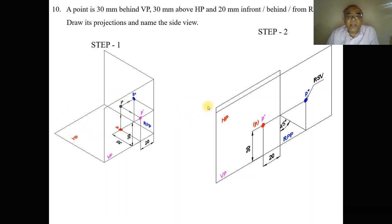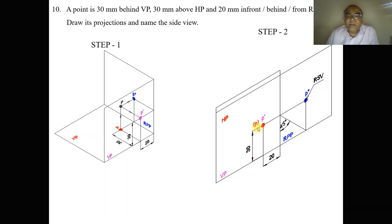When you cut and rotate the planes, VP and HP will overlap and RPP will come to the right side. The distance behind VP and behind RPP can be seen in both VP and HP. Above HP is 30 mm and behind VP is 30 mm, so p-dash and the top view will be overlapping since HP is the plane that is rotated — p is written in brackets.